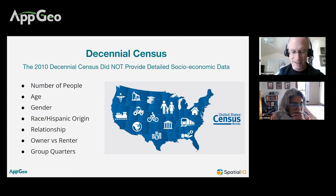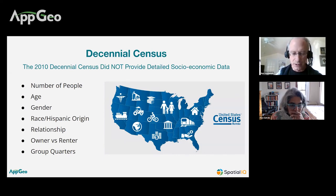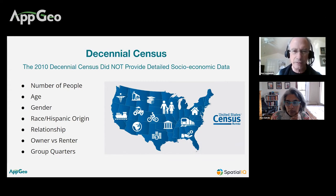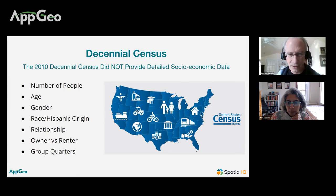One of the important things to remember about census data is they collect an awful lot of data. We tend to think of census in terms of the decennial census every 10 years, and that is kind of where people's brains go when they think of the census. But there's a tremendous amount of additional data, not just demographic data, but economic information. What I'm going to focus on today is the demographic side of the census. One of the most important things to remember is that the decennial census every 10 years is only this very short list of data characteristics.